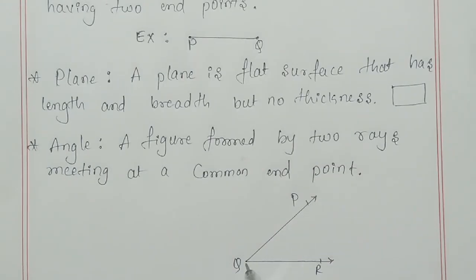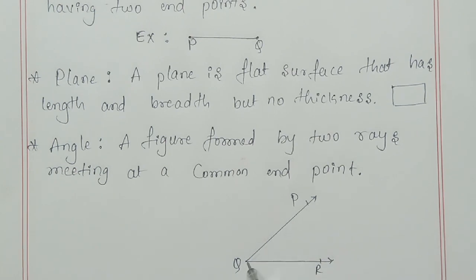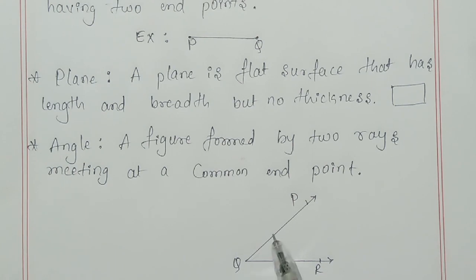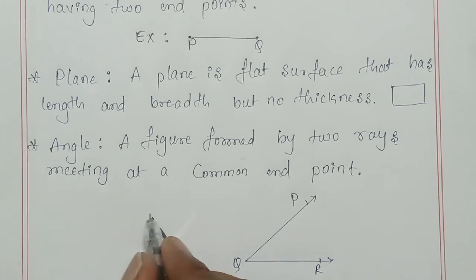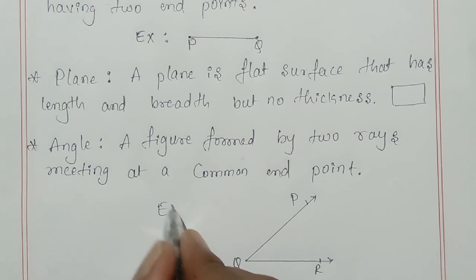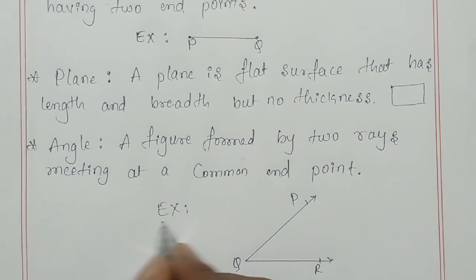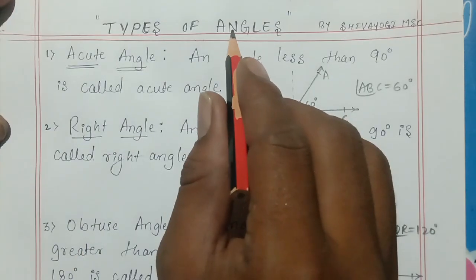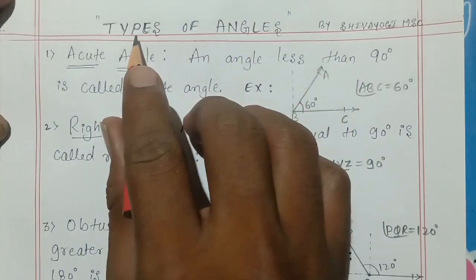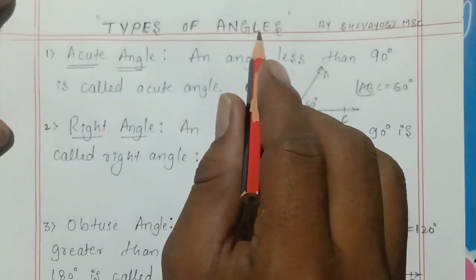This is one ray and this is one ray. These two rays meet at one point, that is Q. So this is said to be an angle. This is an example of an angle. In this class I will explain the types of angles.